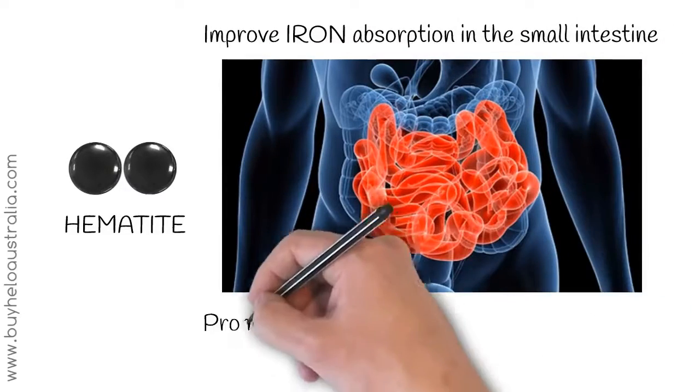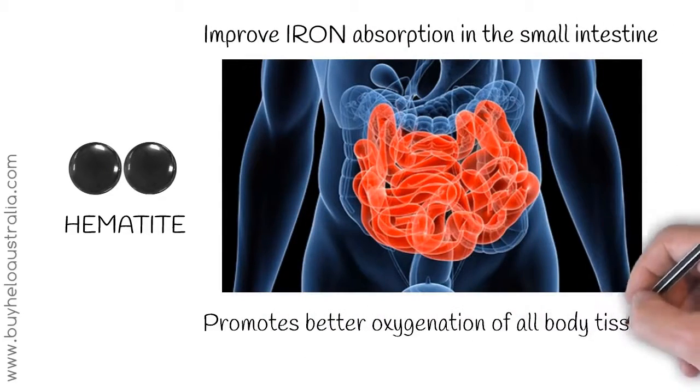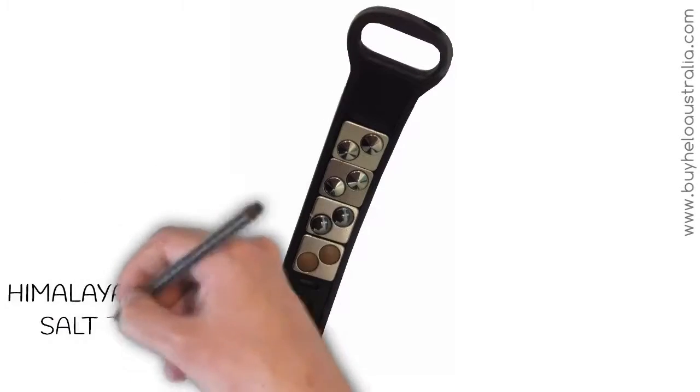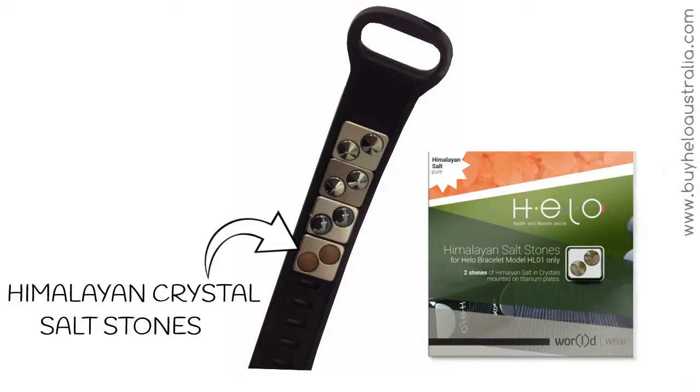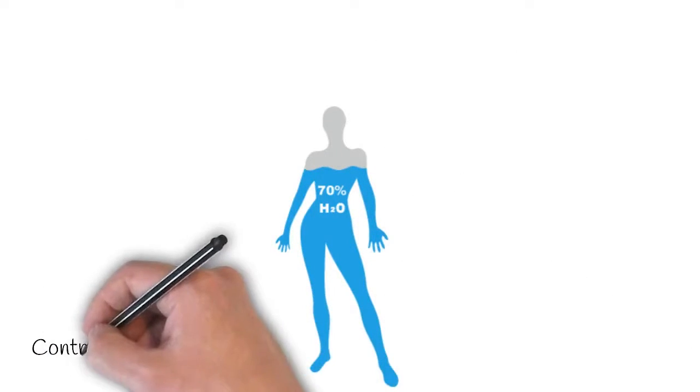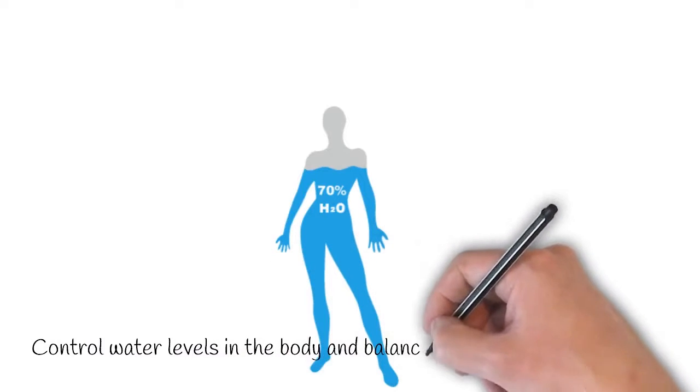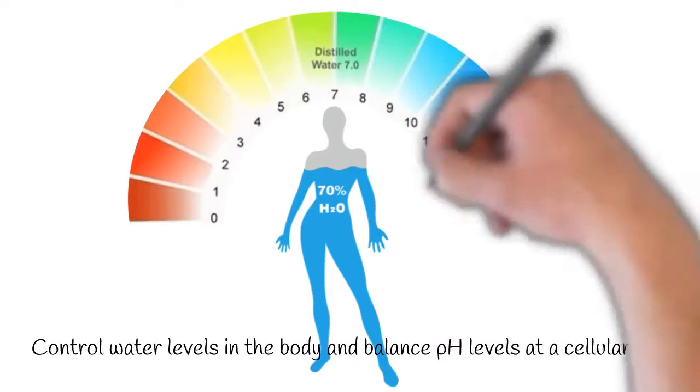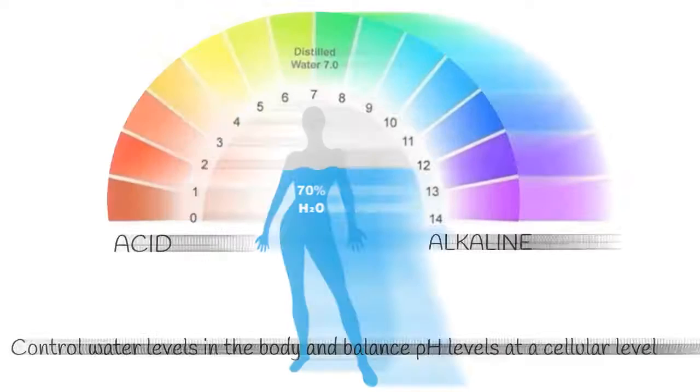There are also titanium plates with Himalayan crystal salt stones. Among their benefits is the control of water levels in the body and their adjustment so as to ensure more balanced pH levels in the body at a cellular level, including the brain.